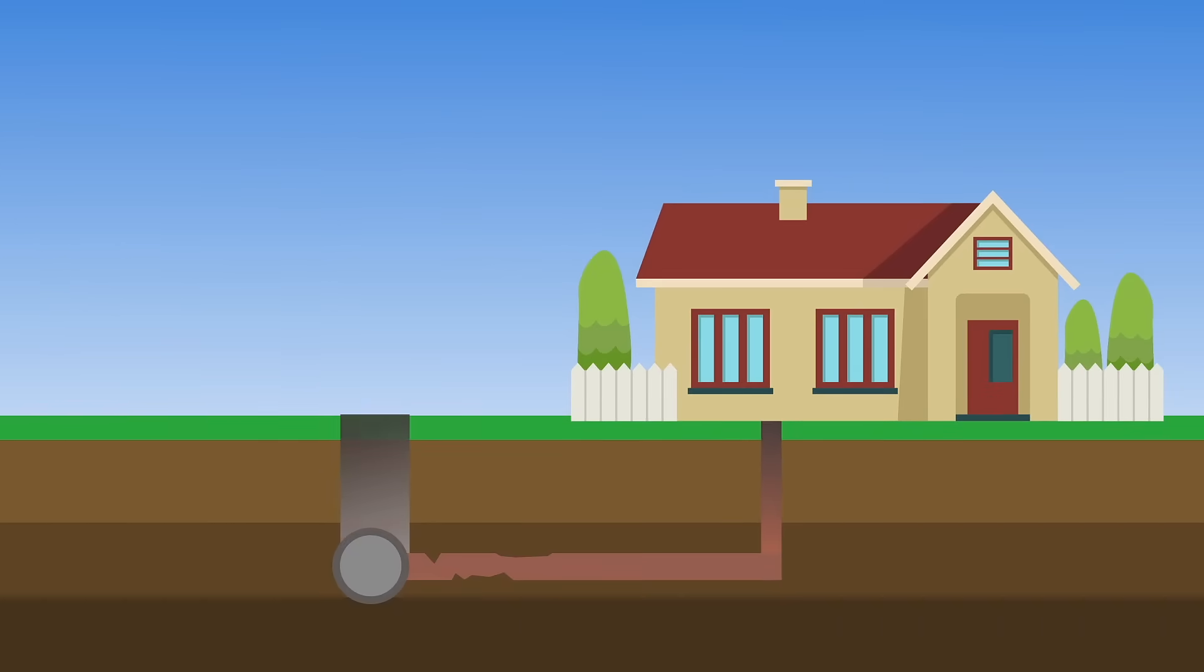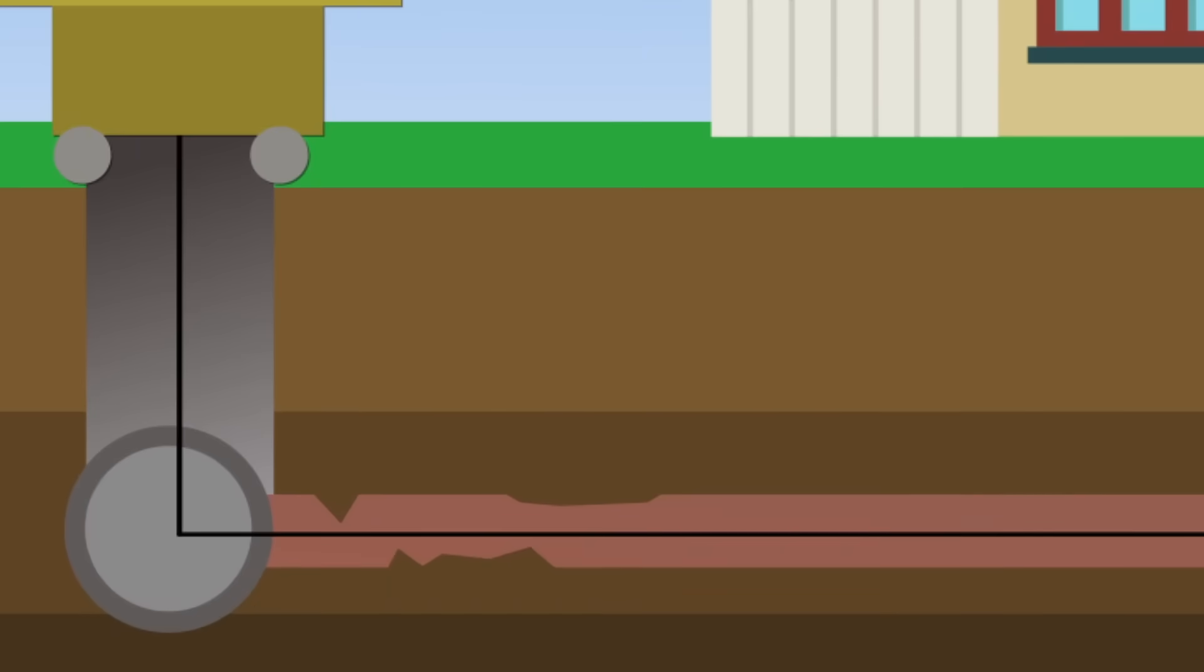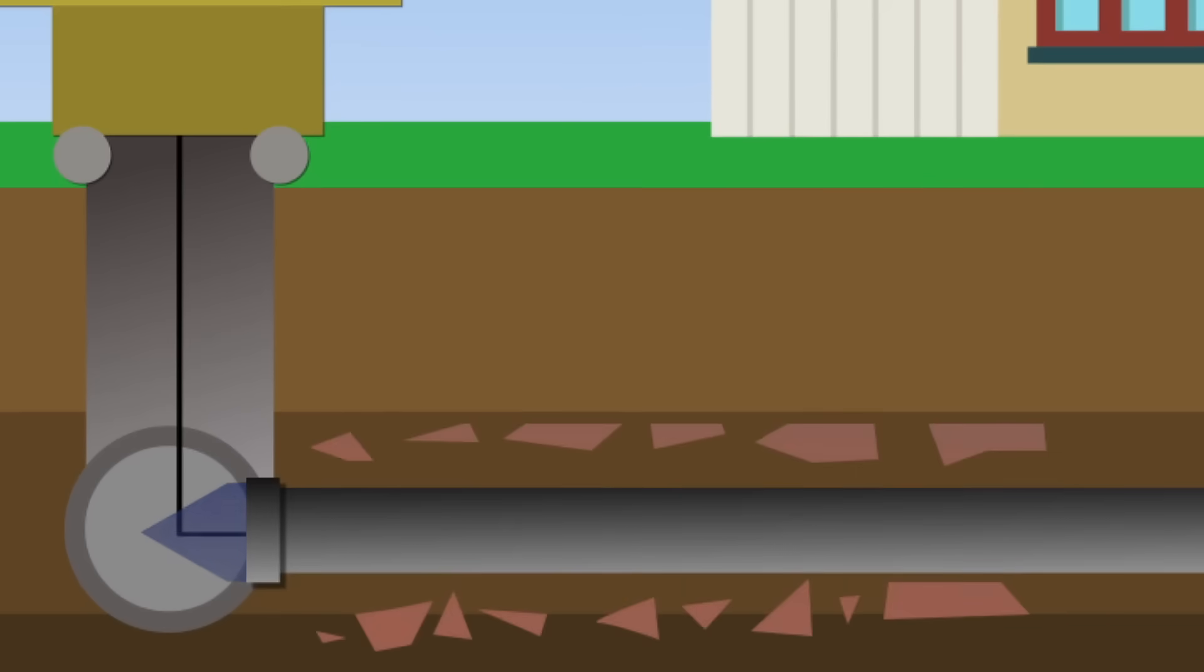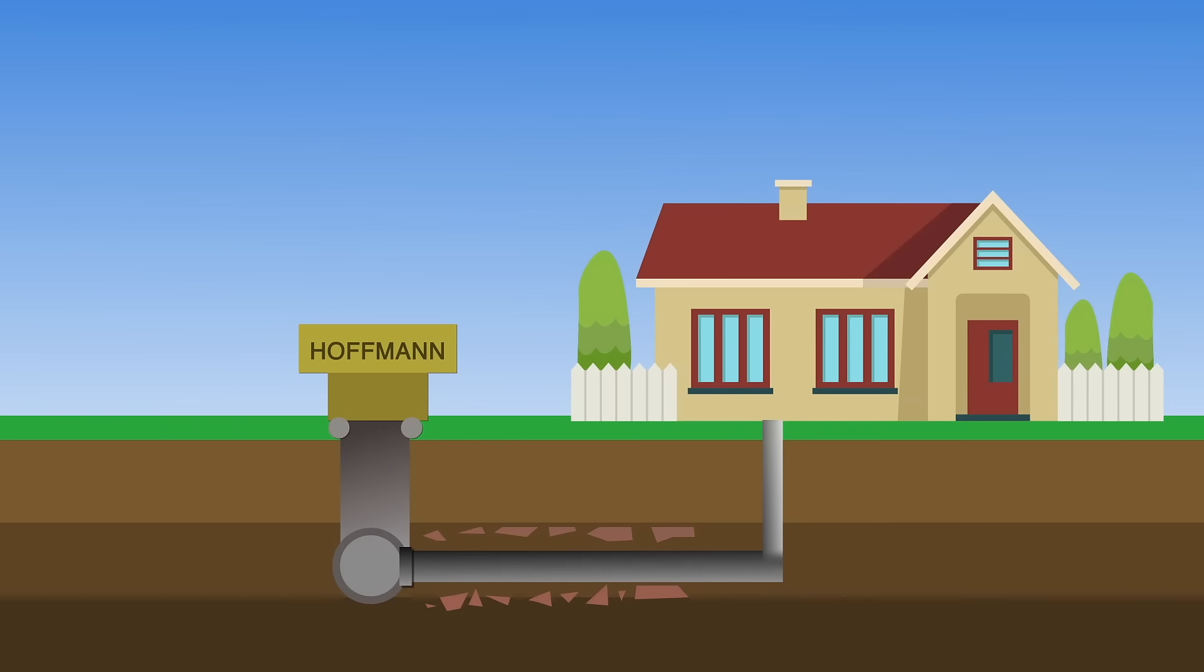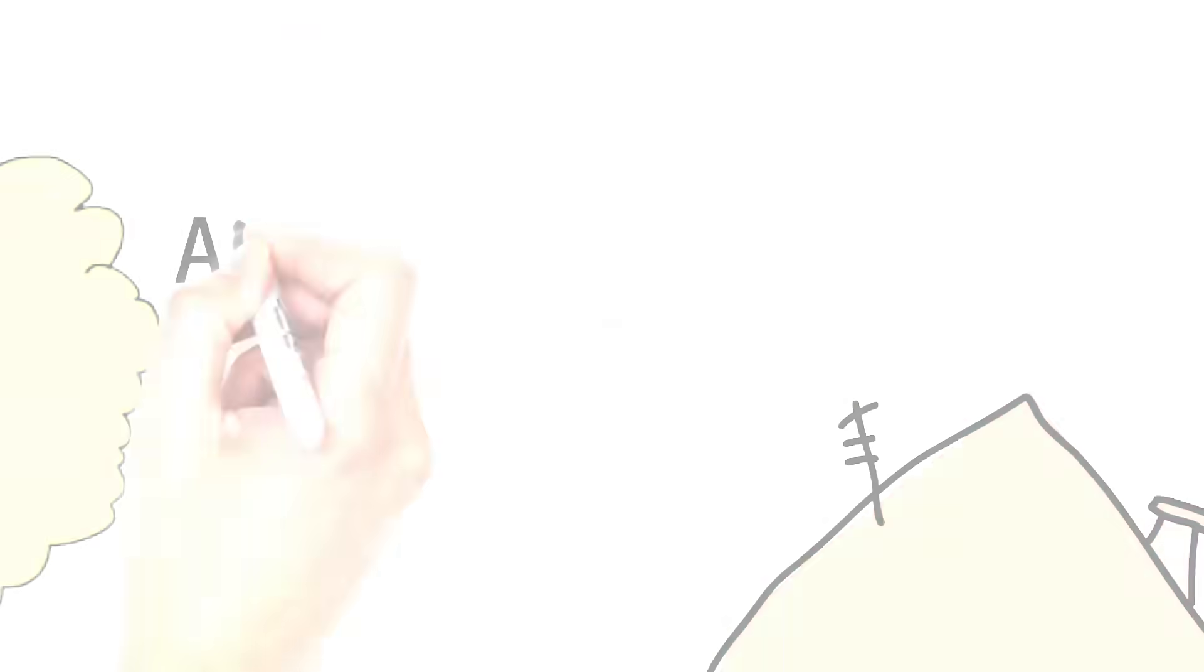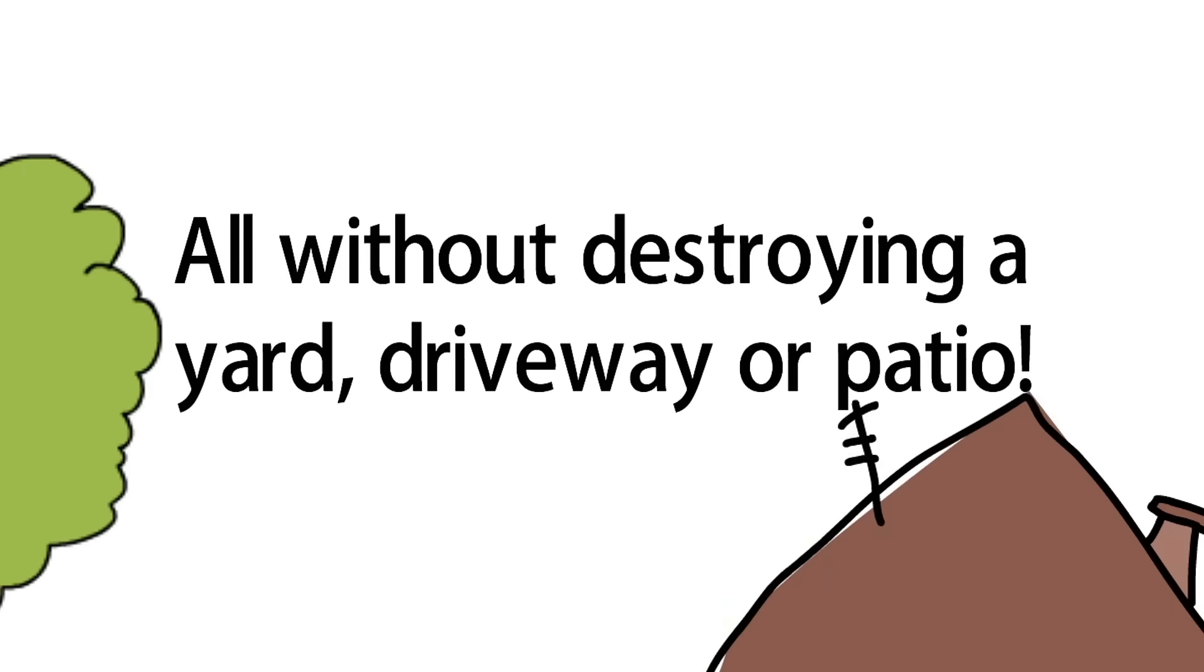With trenchless pipe bursting, small access points are created and a cable is inserted into the existing pipe. A cable is pulled through while carrying a new pipe causing the old pipe to crumble or burst. All this is done without destroying a yard, driveway, or patio.